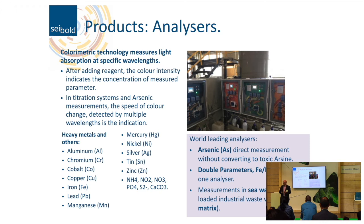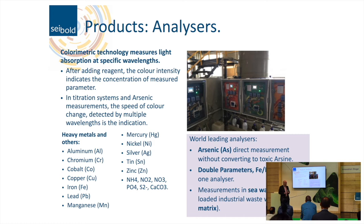The most important analyzers: first is the arsenic analyzer. We do direct arsenic measurements starting at 1 PPB, mostly in the range of 1 to 50 PPB, without converting to arsine — we do not want toxic gases created by our analyzer. We also measure double parameters: iron and manganese together, nickel and copper together, and copper and zinc together in one analyzer.